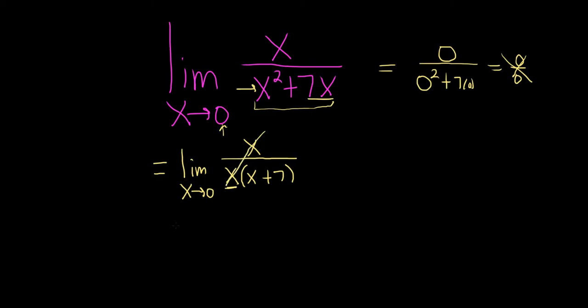And now we see that the x's cancel. So this is equal to the limit. So we're still writing the limit sign. As x approaches 0 of 1 over x plus 7.